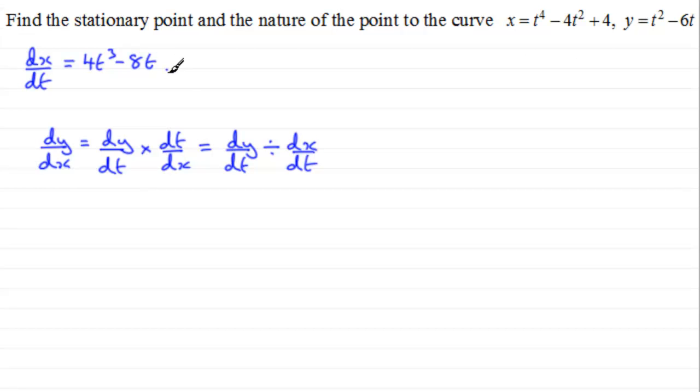And also for dy by dt, that's going to be equal to 2t minus 6. So we've got our two differentials. Now it doesn't matter which one of these I use, but if I substitute dy by dt in, because it's in both versions, we're going to have 2t minus 6.